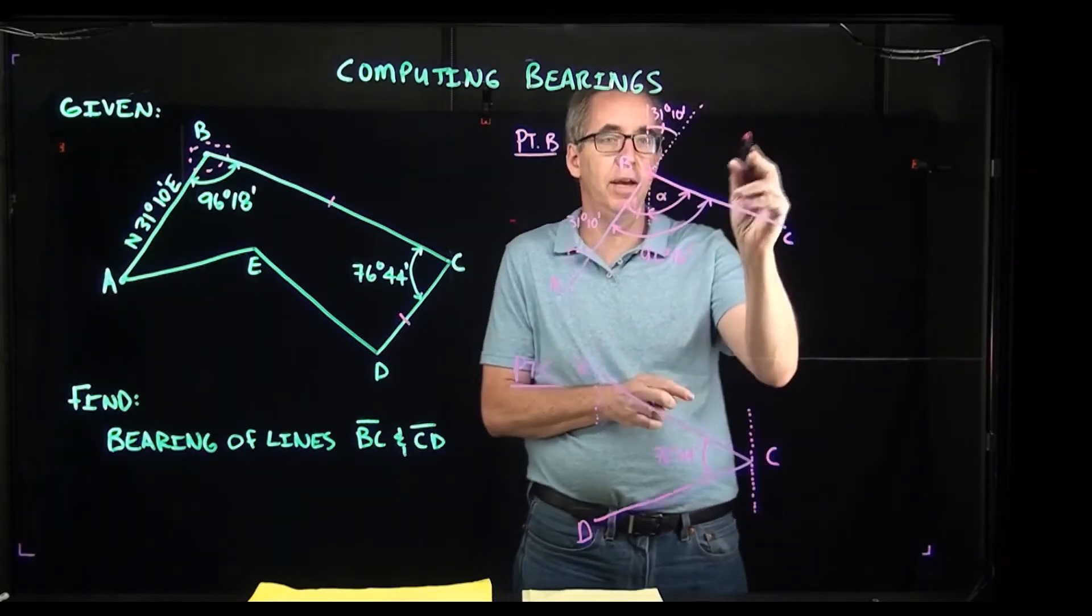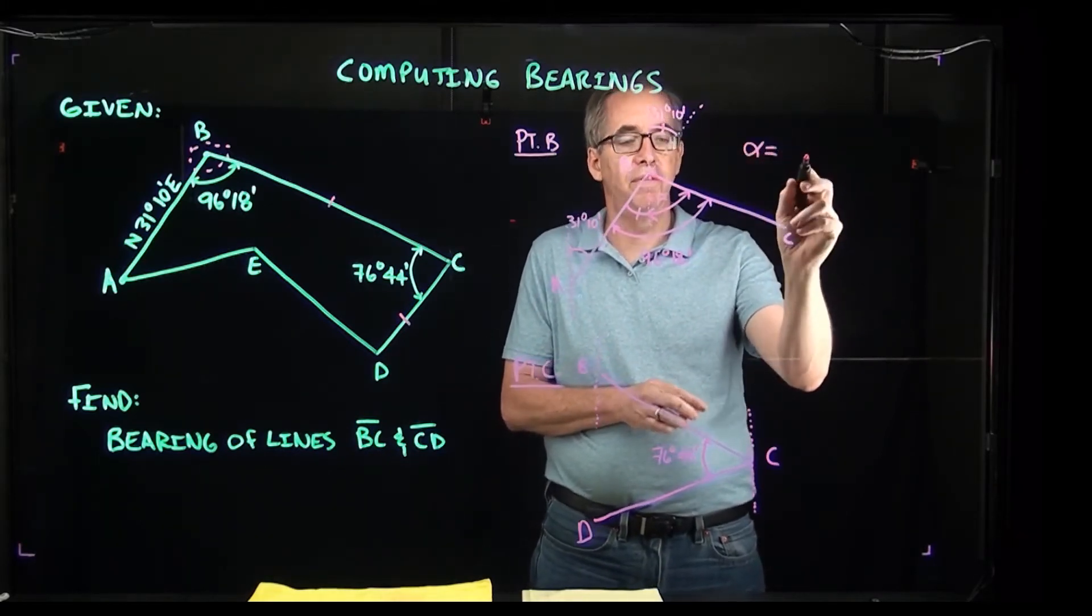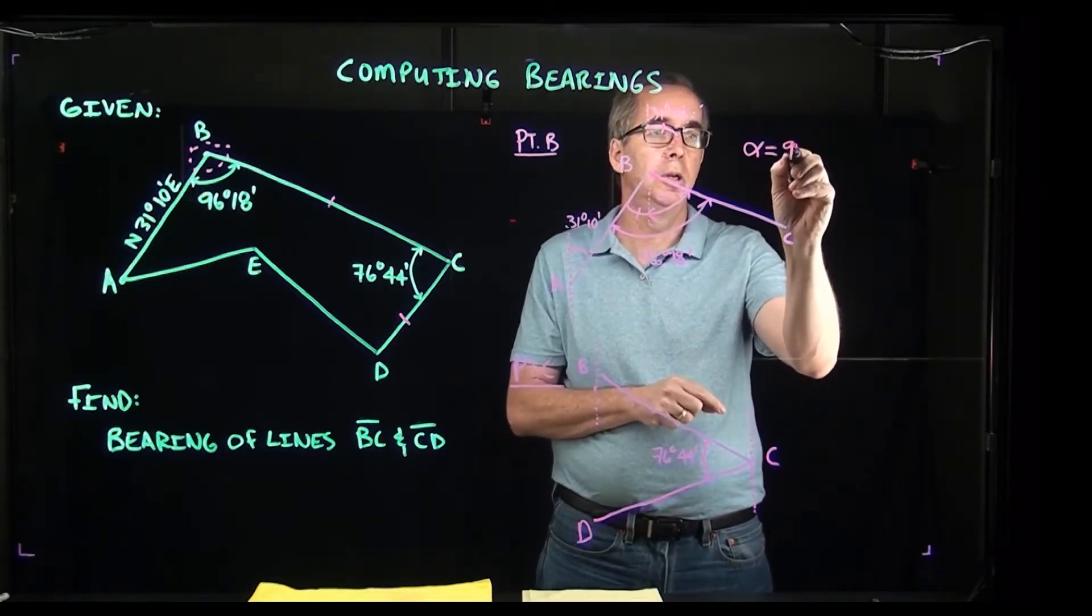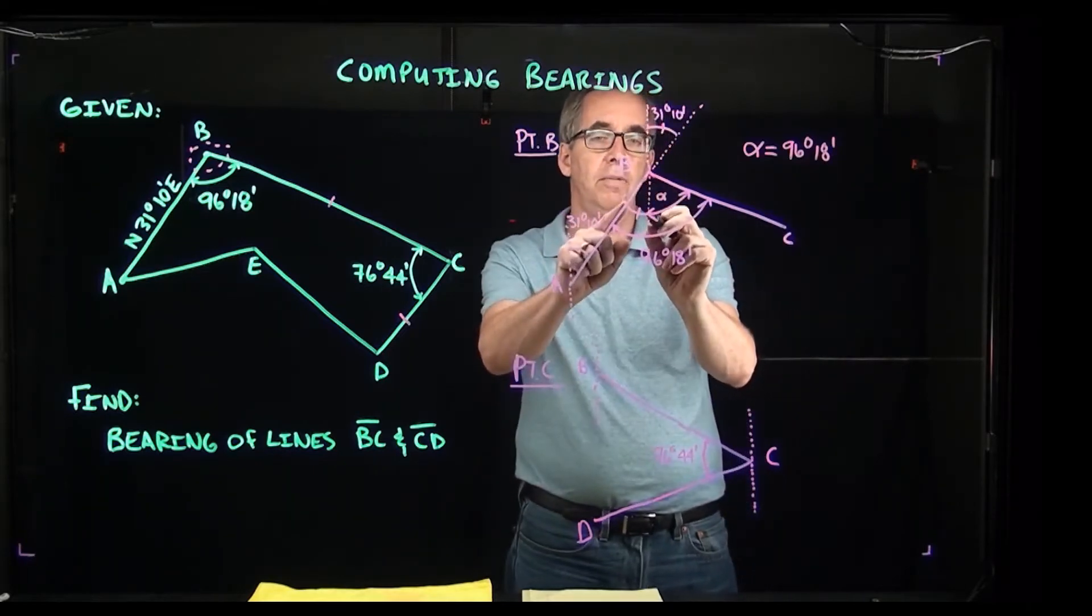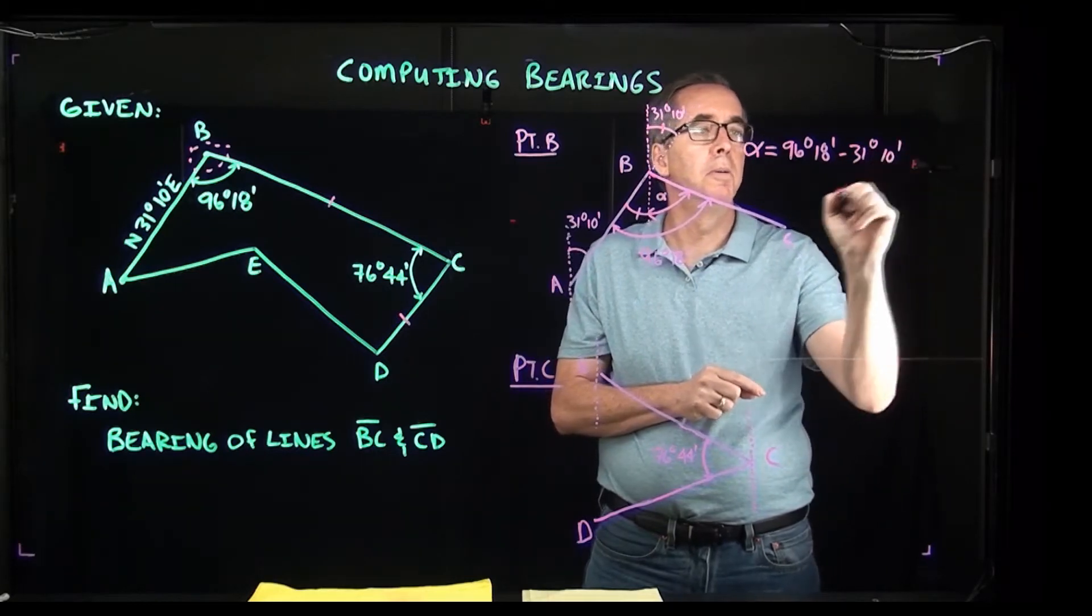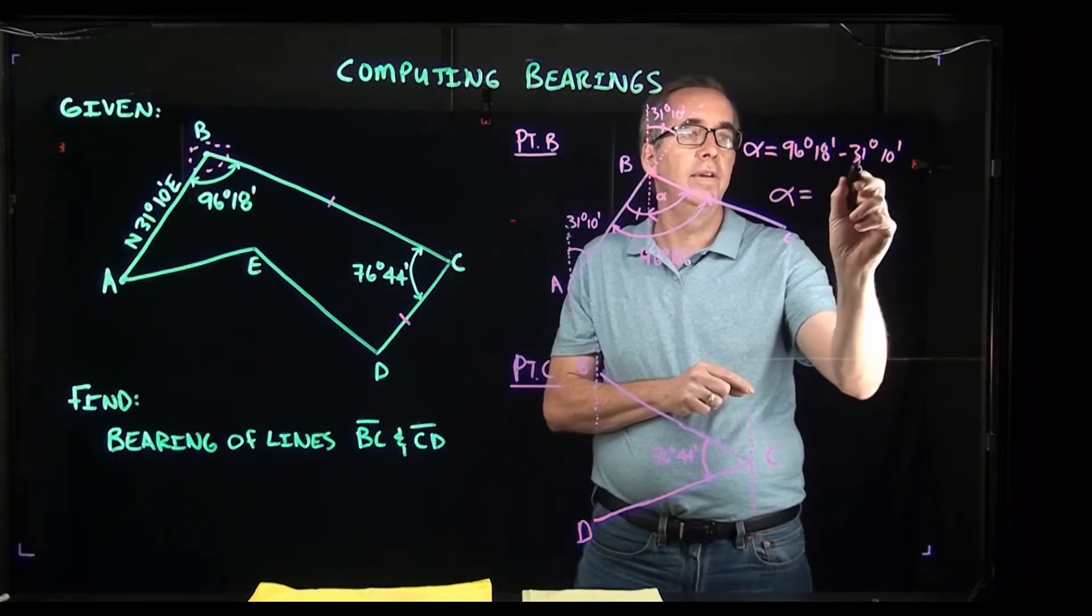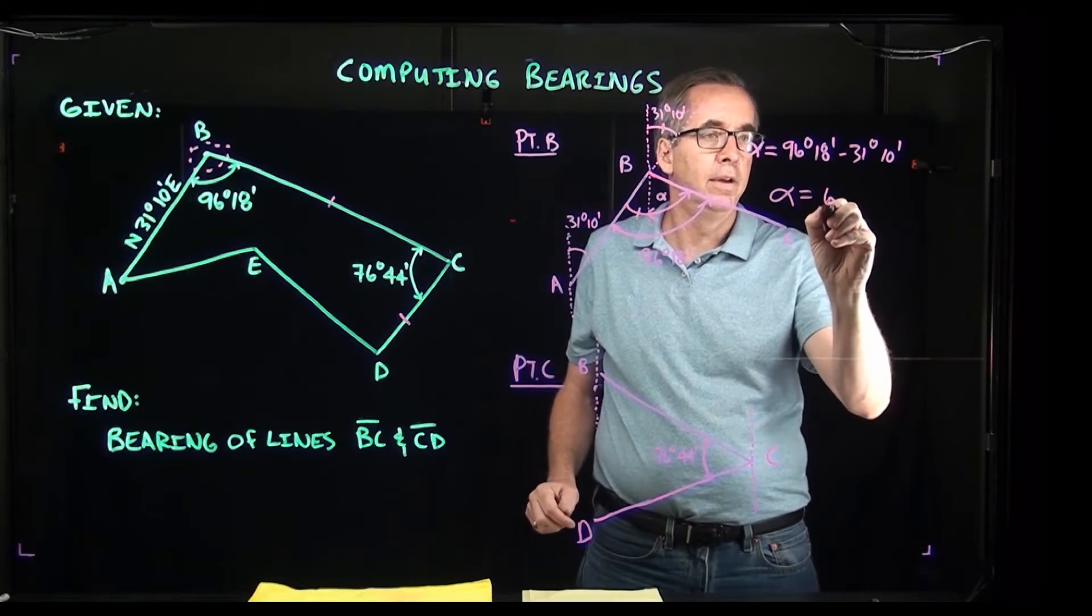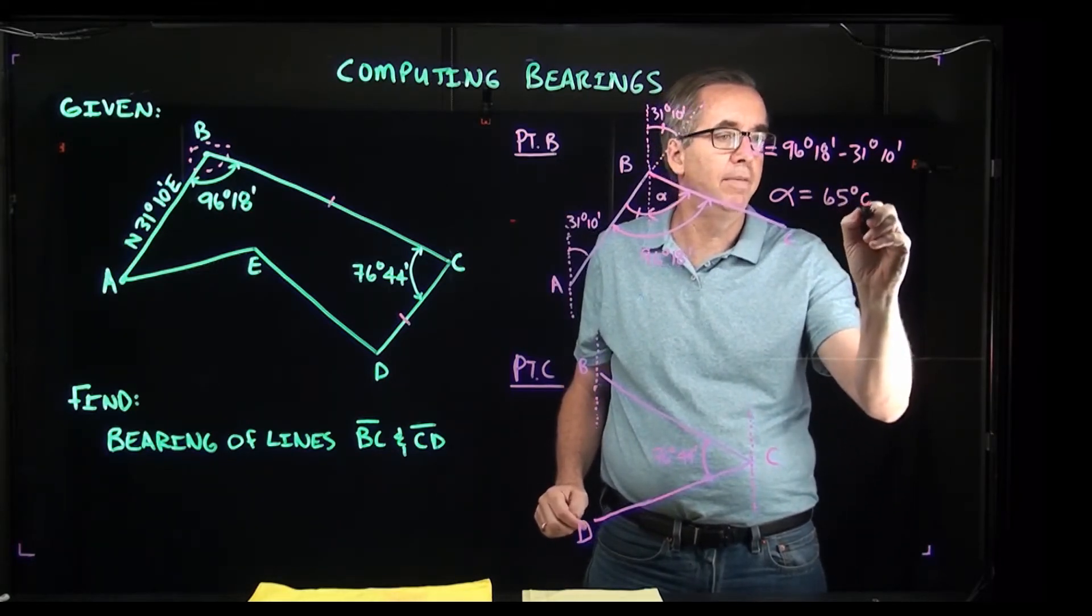Let's go ahead and go through and calculate what alpha is. Alpha is going to be the difference between the 96 degrees 18 minutes and this little angle that we have here which was 31 degrees 10 minutes. So alpha ends up being, let's see, 96 minus 31 is 65 degrees, and then here we would have 8 minutes left after that.